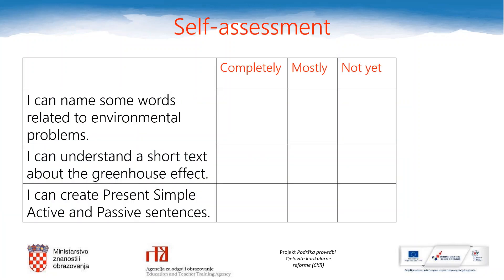Here is the self-assessment list. What can you do after today's lesson? Can you name some words related to environmental problems? Can you understand a short text about the greenhouse effect? Can you create present simple passive and active sentences? You can put a tick into the completely, mostly, or not yet column. Remember that you can always go back and repeat all these activities. This is the end of today's lesson. Thank you for watching and goodbye.